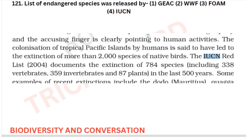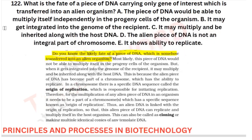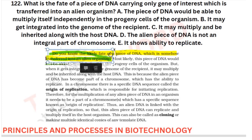The list of endangered species was released by the IUCN — this is from your biodiversity and conservation chapter. The IUCN released the Red List in 2014, and this is from your NCERT directly. Next: what is the fate of a piece of DNA carrying only a gene of interest which is transferred into an alien organism? This question has already been directly asked in the NCERT itself, and they have asked it again. This is from your principles and processes in biotechnology.